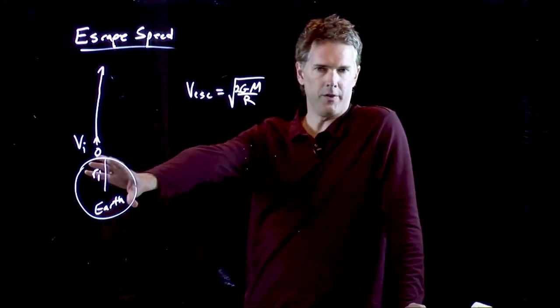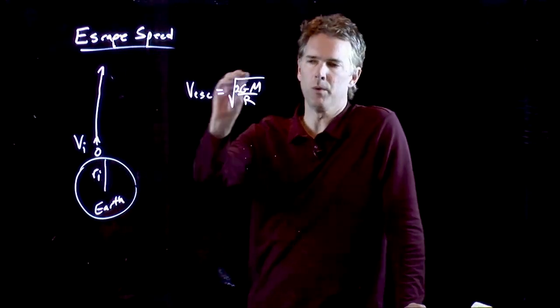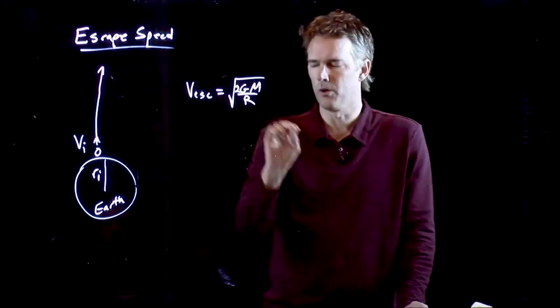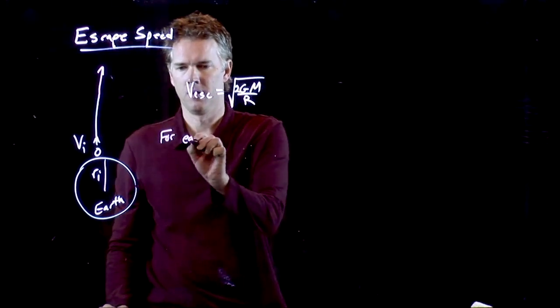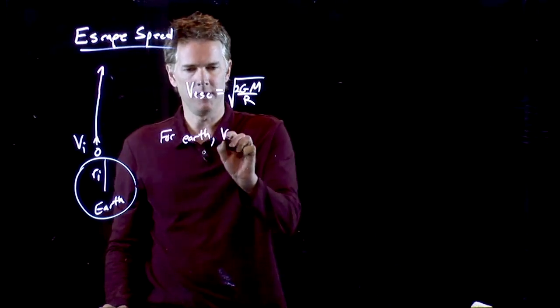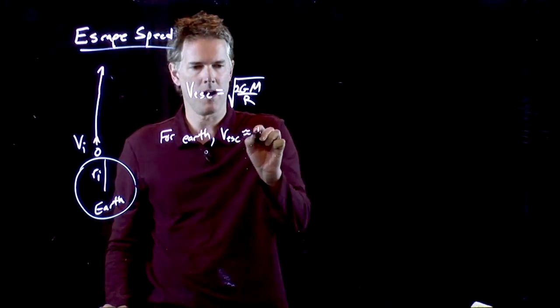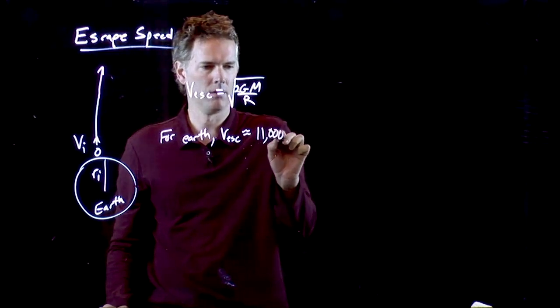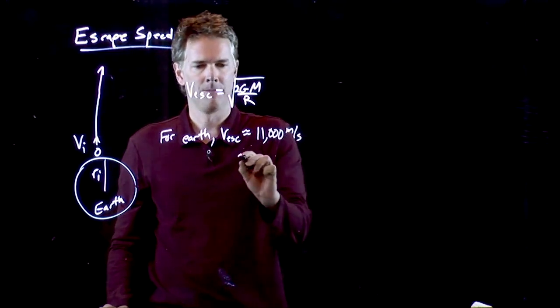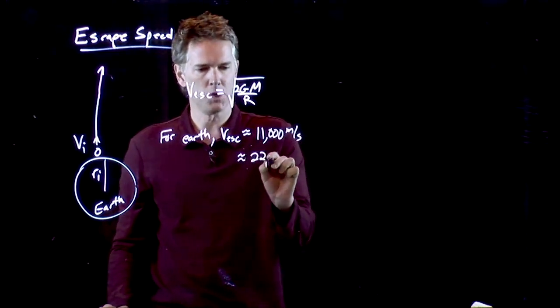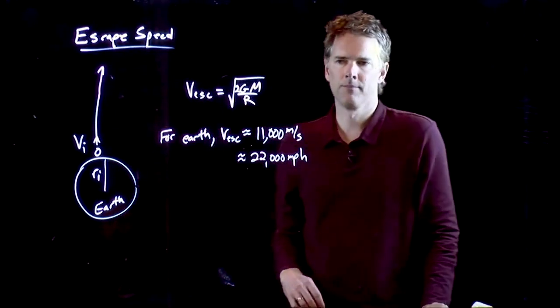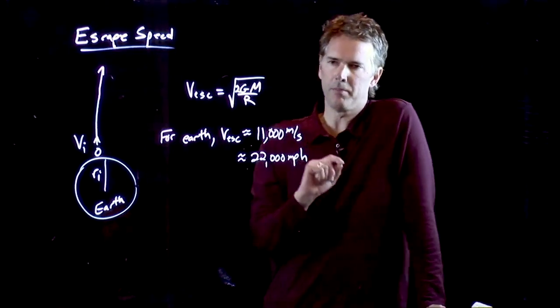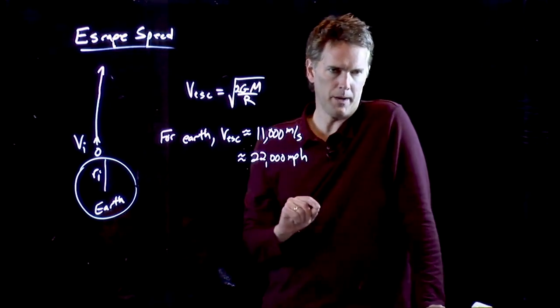You can calculate what this is for the earth very easily. We know the mass of the earth, we know the radius of the earth. So for the earth, you're going to get V escape somewhere around 11,000 meters per second, which is about 22,000 miles per hour. If you launch something from the earth at that speed, it will leave the earth and never come back.